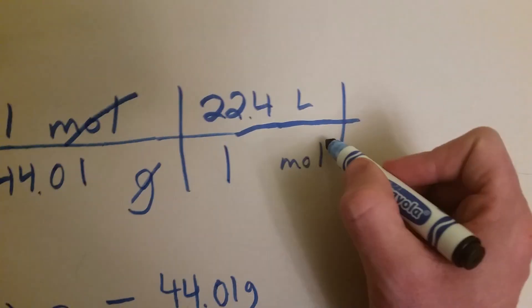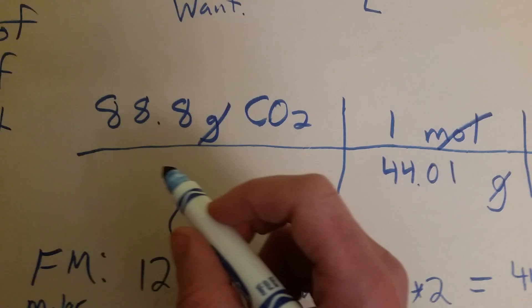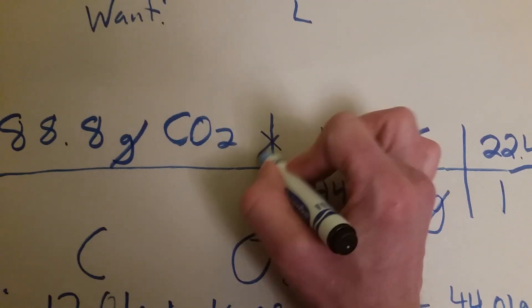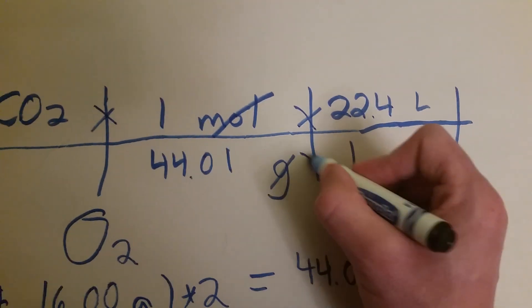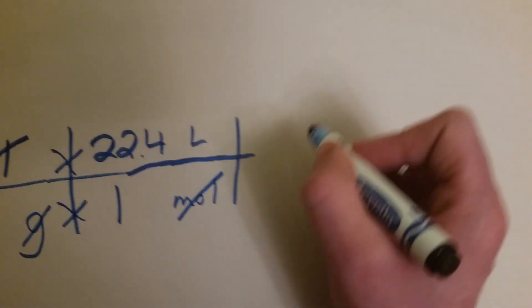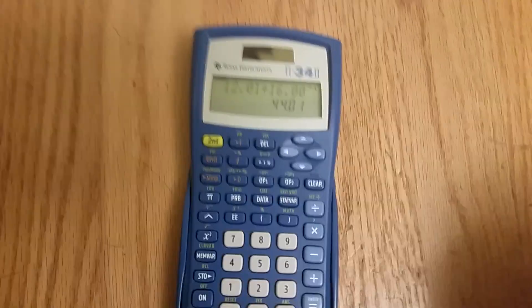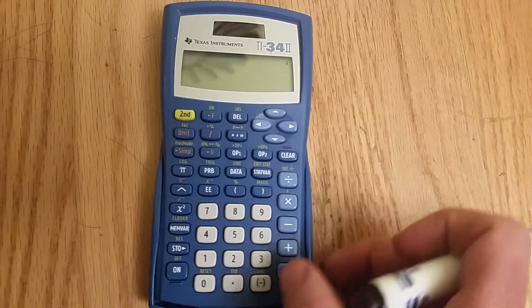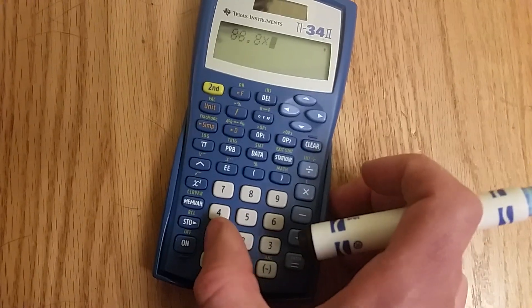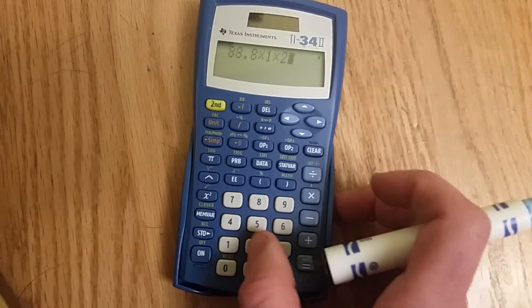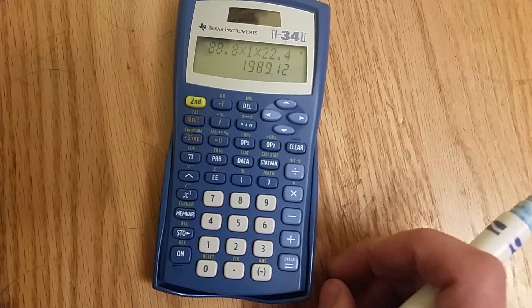Let's see, these units are going to cancel now too. All right. So, we're just going to multiply everything on the top. And then, we'll divide it all by everything multiplied on the bottom. Let's throw that in our calculator. Here we are. Let's go ahead and clear. We'll go 88.8 times 1 times 22.4. That all equals 1989.12. And it's going to be liters.